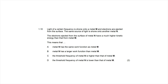Question 1.10: light of a certain frequency ejects electrons from metal M. The same light shines on metal N, and electrons from N have much higher kinetic energy. Using the photoelectric equation: E_photon = Work function + KE. Since the same light is used, photon energy is identical for both metals. The only way KE is higher for N is if the work function of N is lower, leaving more energy to become kinetic energy.